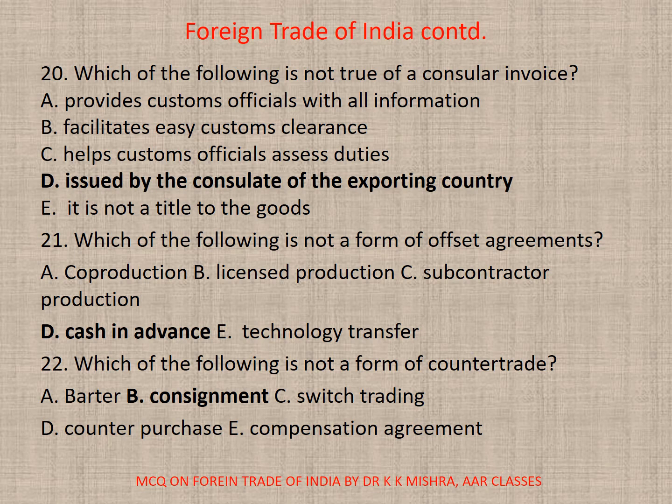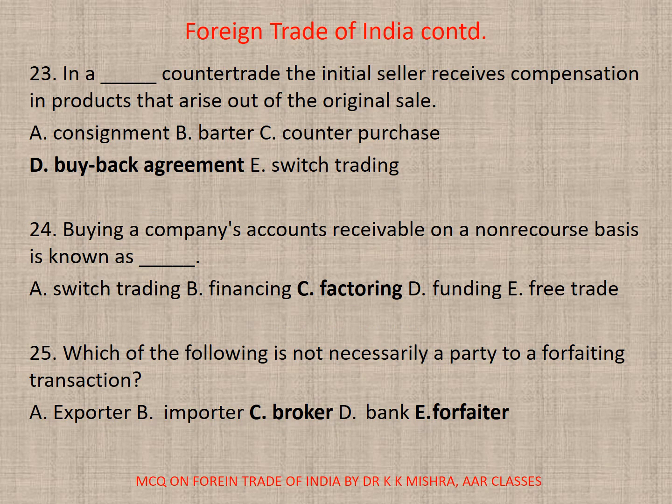Question 21: Which of the following is not a form of offset agreements? The correct option is D — cash in advance. Question 22: Which of the following is not a form of counter-trade? The correct option is D — Consignment. Question 23: In a dash counter-trade, the initial seller receives compensation in products that arise out of the original sale. Options: A. Consignment, B. Barter, C. Counter-purchase, D. Buyback agreement, E. Switch trading. The correct option is D — Buyback agreement.